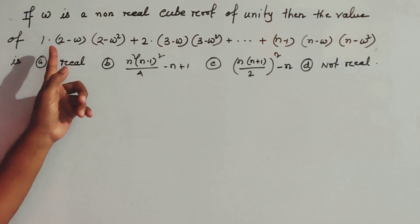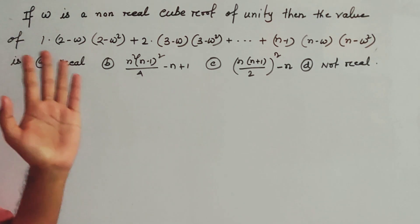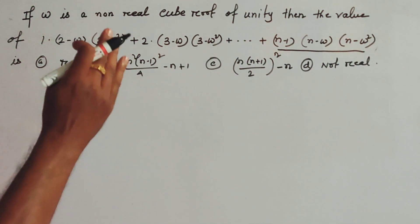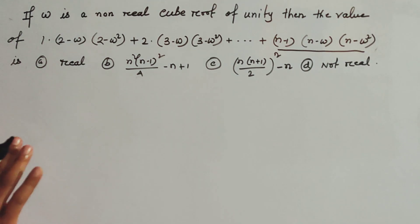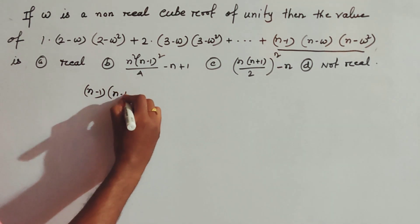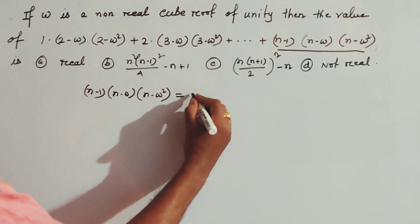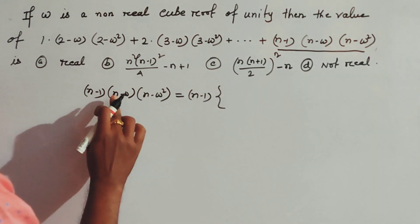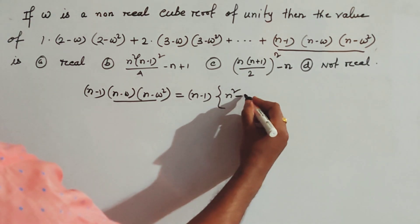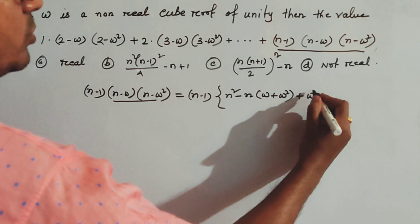We first take the general term of this series. Let it be the last term since it is given in terms of n. The general term is (n−1)(n−omega)(n−omega²). If we multiply these two factors, we get n² − n(omega + omega²) + omega³.